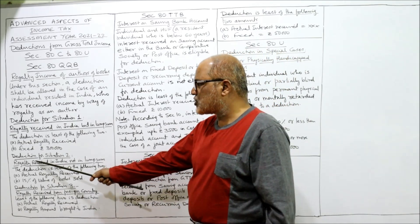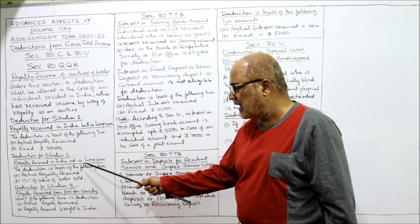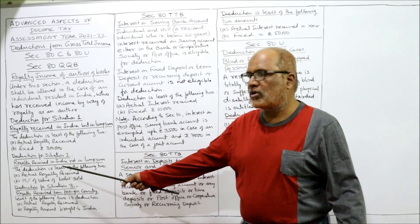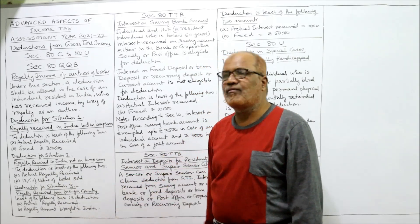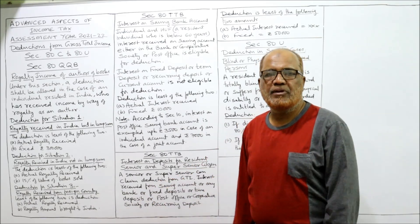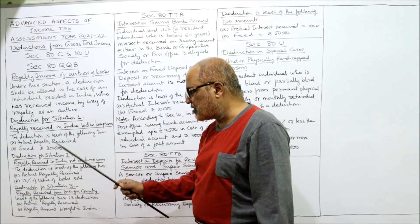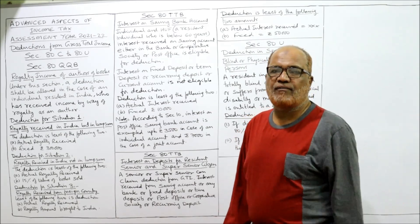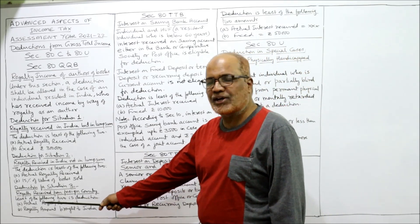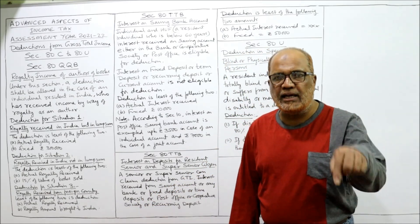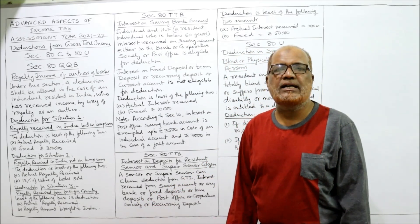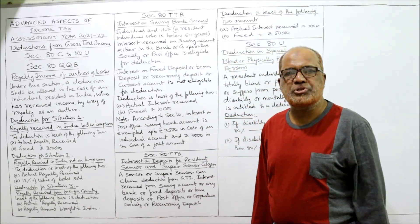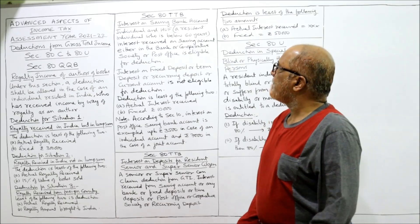Situation two: royalty received in India, not in lump sum — meaning royalty depends on the number of books sold. The deduction is the least of actual royalty received or 15% of the value of books sold. Situation three: royalty received from a foreign country. The deduction is the least of actual royalty received or the royalty amount brought into India. These deductions are rare and not frequently examined, but you should remember the provisions.